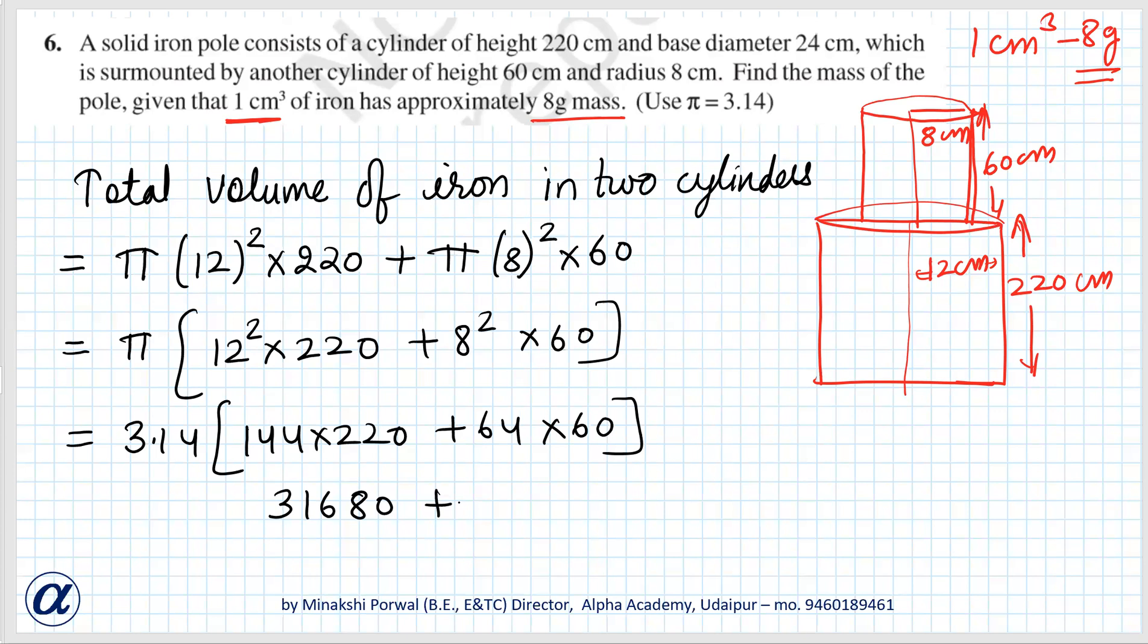So 144 times 220 is 31680 and 64 times 60 is 3840 times 3.14, that is equal to 3.14 times 35520. When we multiply these two numbers we will get 111532.8 centimeter cube.